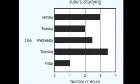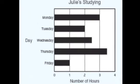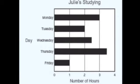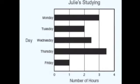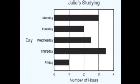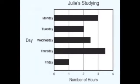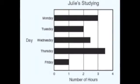In our graph, we've got Julie studying. On the x-axis, we've got the number of hours she studied, and on the y-axis, the days of the week. You can see that she obviously studied the most on Thursday and the least on Friday. You can even be exact — looking at the bar for Monday, she studied three hours. Go ahead and take a little time to make some conclusions based on that graph.